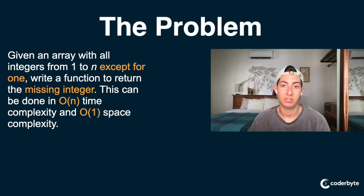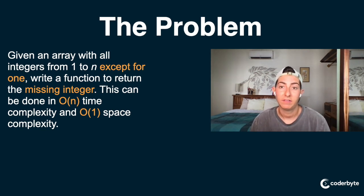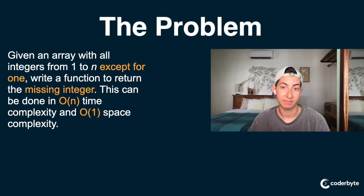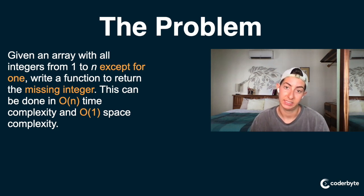Given an array with all integers from 1 to N except for one, write a function to return the missing integer. This can be done in O(N) time complexity and O(1) space complexity.